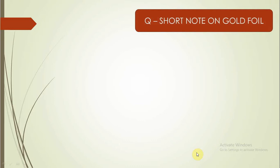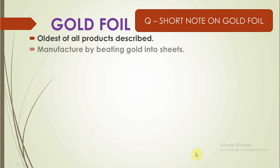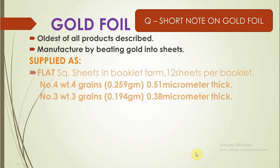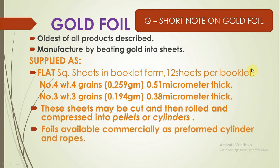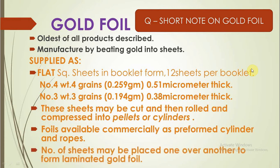A short note can be expected on gold foil. Gold foil is the oldest of all products available and is manufactured by beating gold into sheets. They are available as flat square sheets in booklets containing 12 sheets per booklet, numbered based upon their weight. Sheets can be cut and rolled, compressed into pellets or cylinders. Foils are also available as pre-formed cylinders or ropes, and multiple sheets can be placed upon one another to form laminated gold foil.